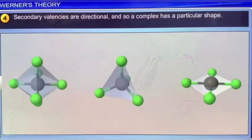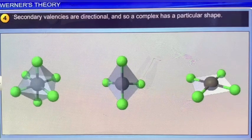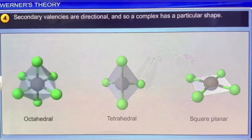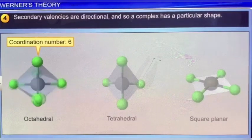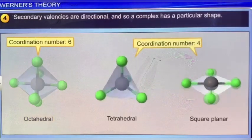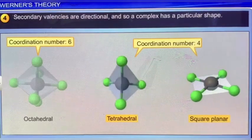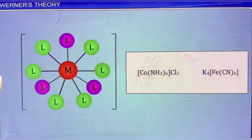The fourth postulate is that secondary valencies are directional, and so a complex has a particular shape. The number and arrangement of ligands in space determines the stereochemistry of a complex. The most common coordination number in transition metal complexes is 6, and the shape is usually octahedral. The coordination number 4 is also common, giving rise to either tetrahedral or square planar complexes. This postulate predicted the existence of isomerism in coordination compounds. Werner introduced the concept of using square brackets to enclose the atoms that make up a coordination complex, which are therefore not ionized.